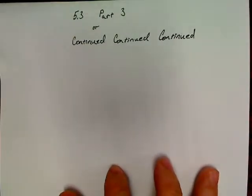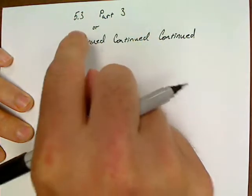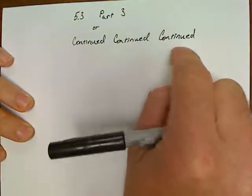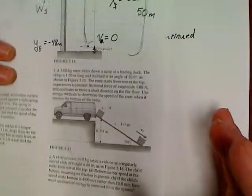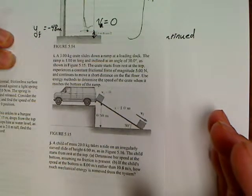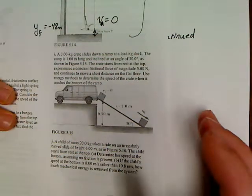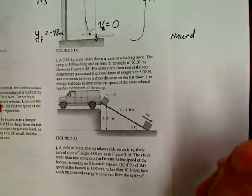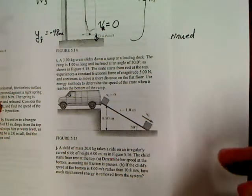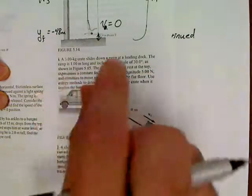We're back again — unit 5.3, continued. I know you're probably thinking: will this unit ever end? It's the longest unit in the entire book. But what's funny is that's what makes this chapter harder than it is — all the examples. The reality is it's just one equation.